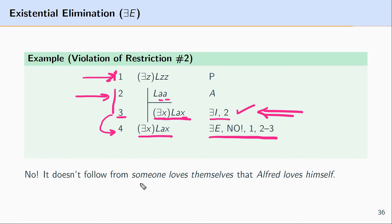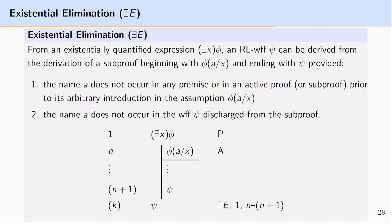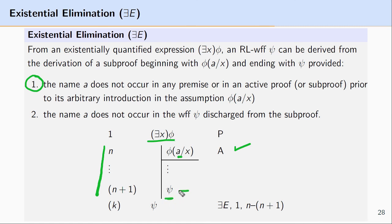You can see how this would not be acceptable reasoning: just from the fact that someone loves themselves, it wouldn't follow that Alfred loves someone. Existential elimination states that from an existentially quantified expression and a sub-proof — where the assumption is built upon the existentially quantified expression by removing the quantifier and replacing all quantified variables with arbitrarily introduced names — we can reason to a formula psi, provided psi does not contain any of the assumed names. Then we can derive psi from the existentially quantified expression and the sub-proof.